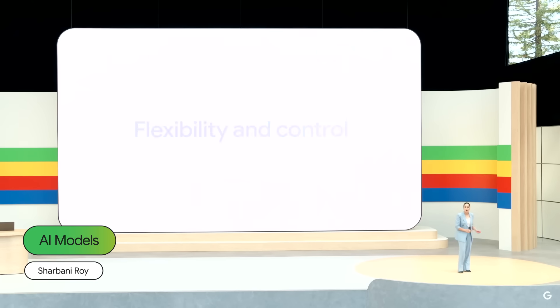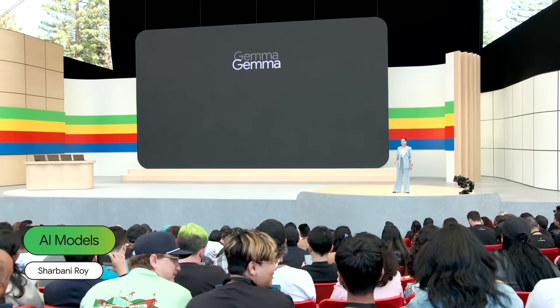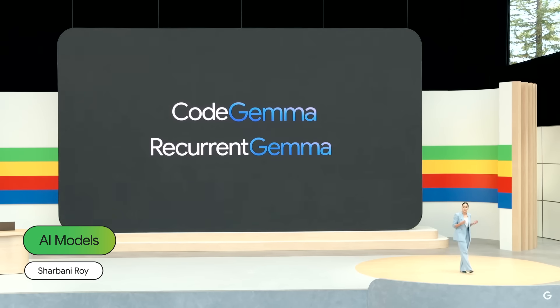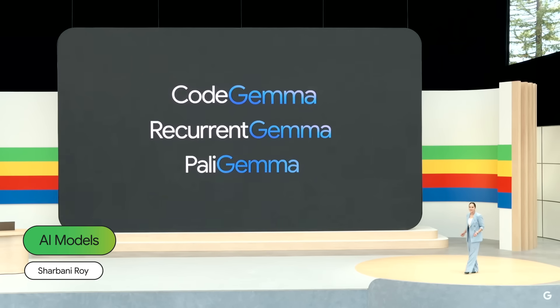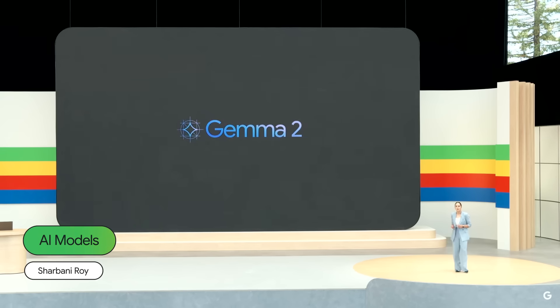What about when you need a little bit more flexibility and control to fine-tune, augment, and ground a model for your specific use cases? That's why we released our Gemma family of open models. Just last month, we released CodeGemma to better support coding tasks across languages, and RecurrentGemma that leverages recurrent neural networks and local attention to improve memory efficiency and faster inference. We're also adding PaliGemma for multimodal image-to-text, and we previewed our next-generation Gemma 2 with a new architecture that achieves stellar performance and fits onto a single TPU v5e.